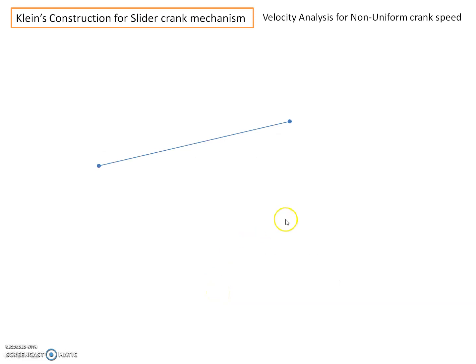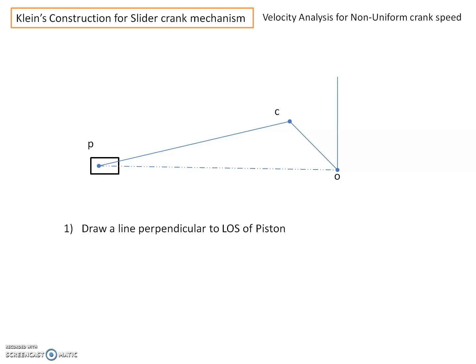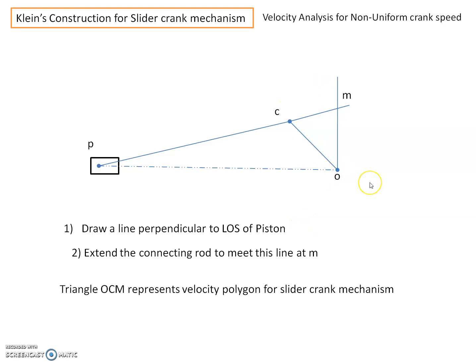First, we need to draw the configuration diagram using a suitable scale for the given dimensions of the slider crank mechanism. Consider the slider crank mechanism OCP drawn at a suitable scale. Before we go for acceleration analysis, we need to perform velocity analysis. The first step after the configuration diagram is to draw a line perpendicular to the line of stroke at O. We then extend the connecting rod to meet this perpendicular at point M.